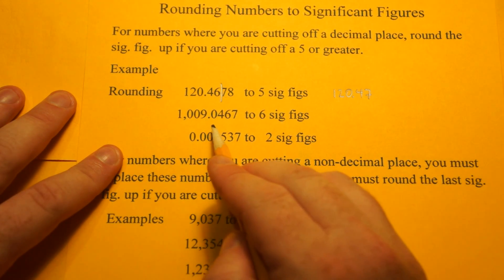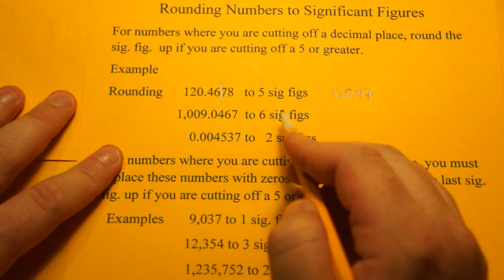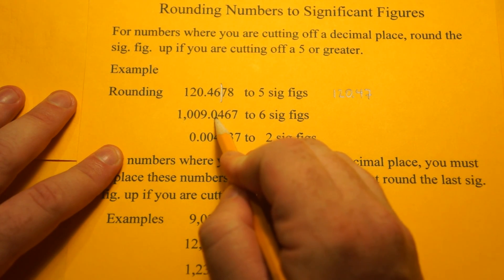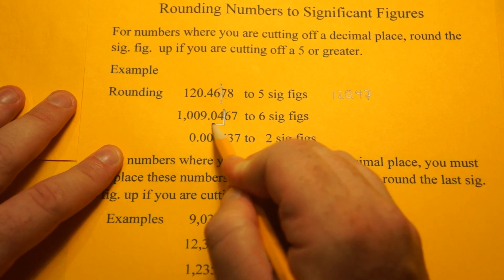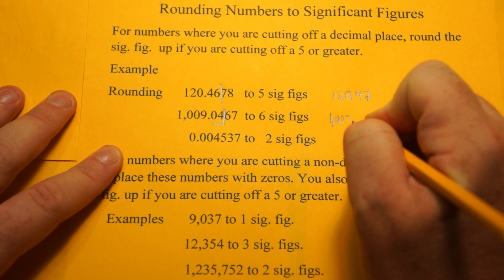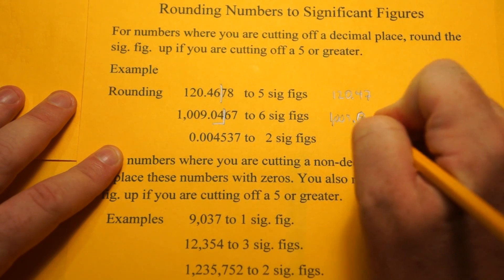Now 1009.0467, we're going to go to 6 sig figs so 1, 2, 3, 4, 5, 6. So right there, we're cutting off a 6. That number has to go up by 1. So 1009.05.